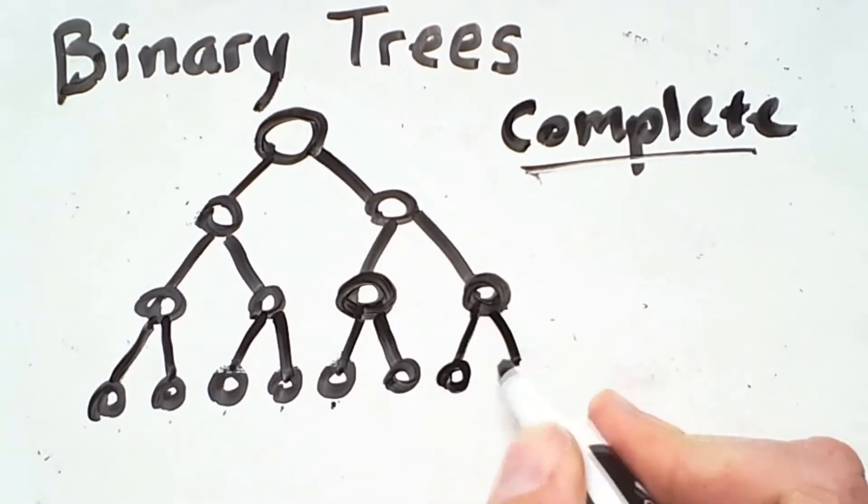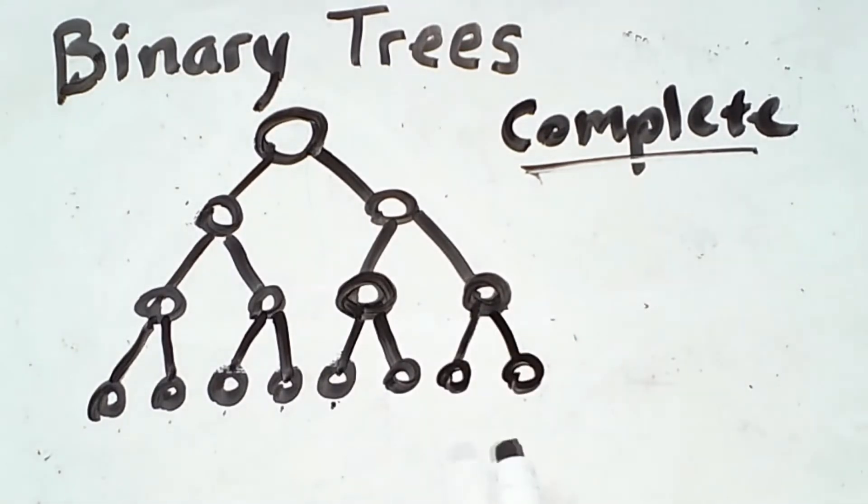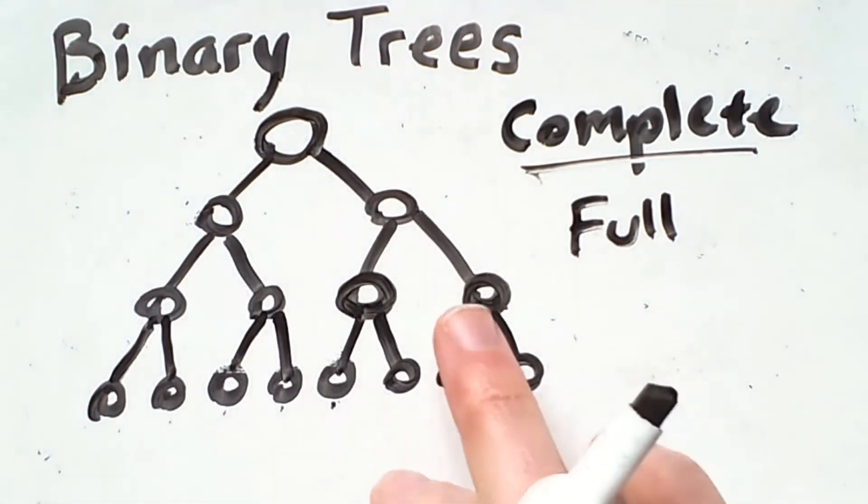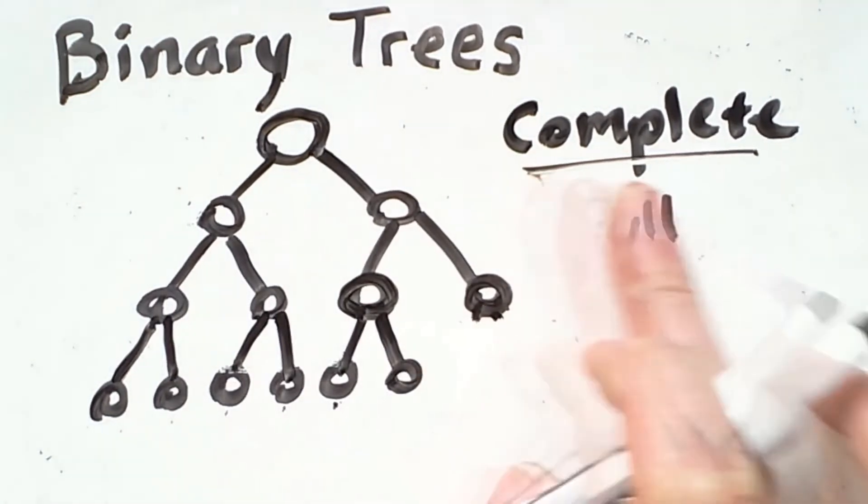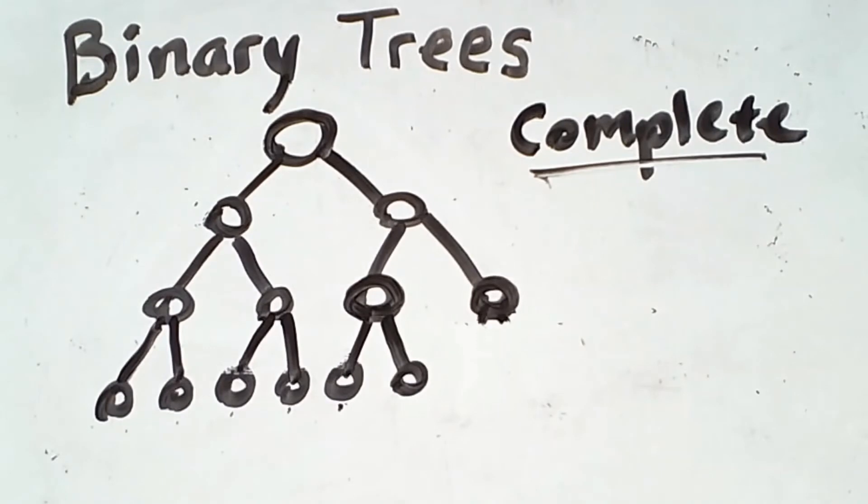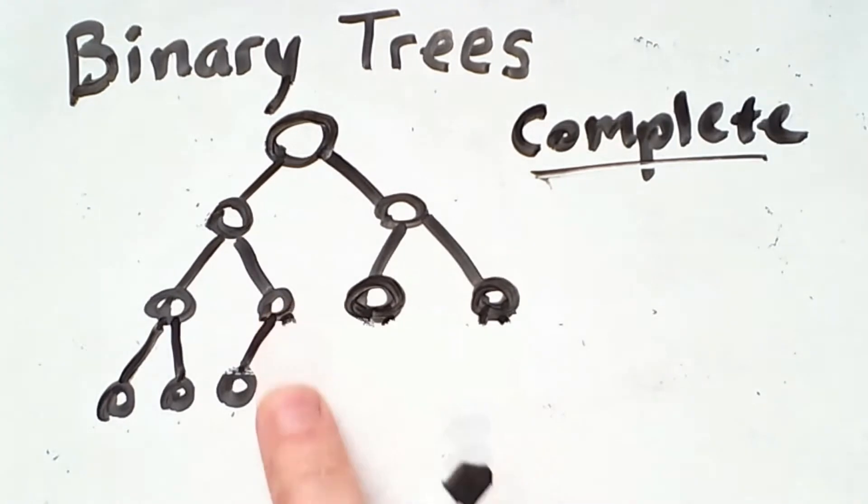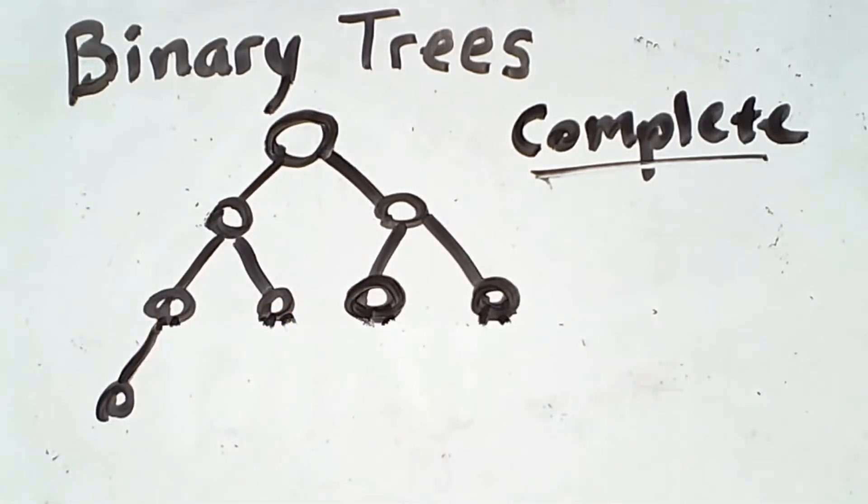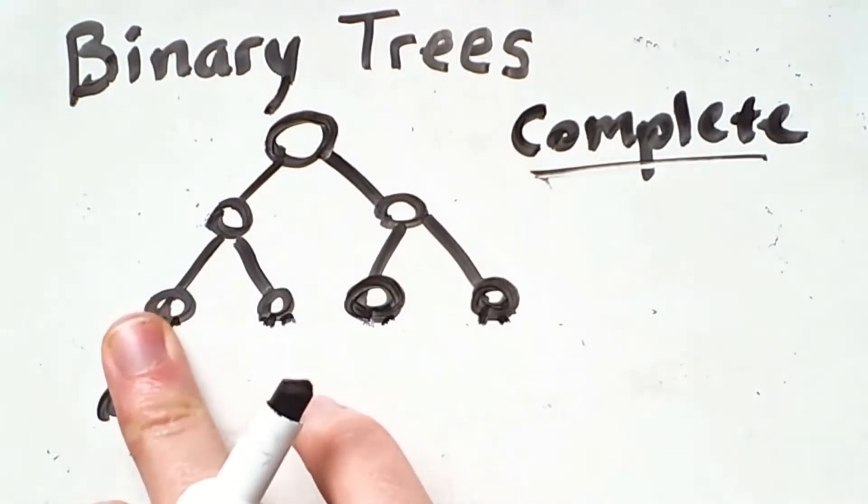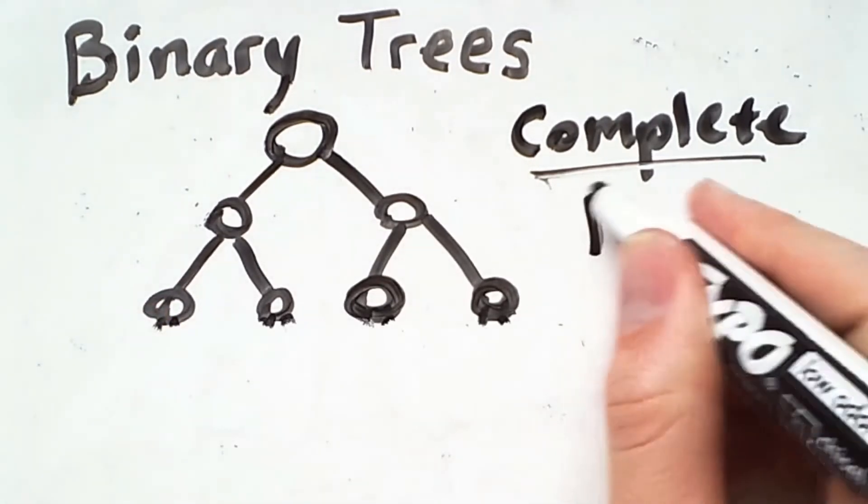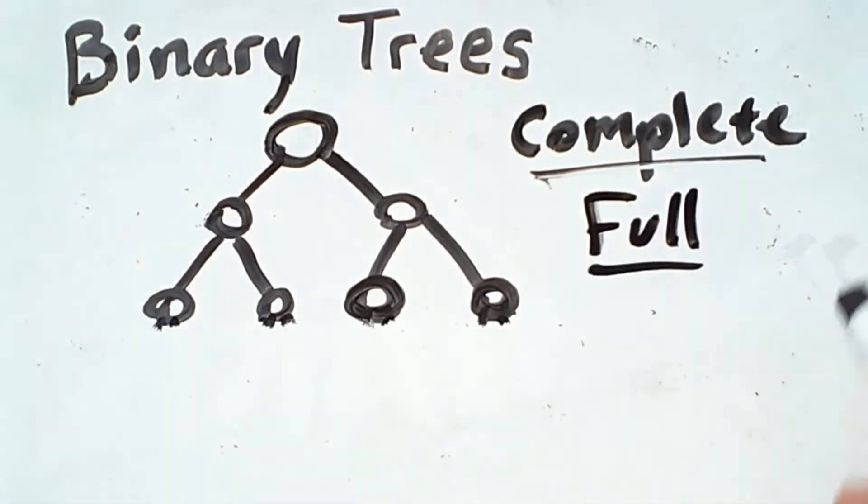Note also that a tree which is full is also complete. So all full trees are complete, but there are complete trees which are not full. This tree is complete, this tree is complete, that tree is complete, that tree is complete, as is that one and that one. And now when I remove this node, we have a tree which is once again full and complete.